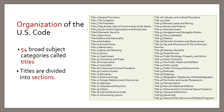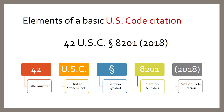The U.S. Code is organized into 54 titles, or broad subject categories. Each of these titles is further subdivided into many subtopics, and the most specific of those is called a section. You can see this reflected in the way we cite the U.S. Code. This citation is to 42 U.S.C. § 8201 from the 2018 edition. Here you can see 42 for the title, U.S.C., the section symbol, the section number, and then the date of the edition. If you were using one of the annual supplements from 2019 or 2020, you would note that in with your date.